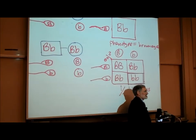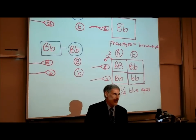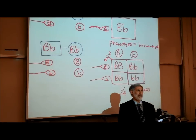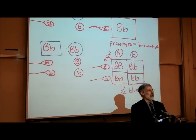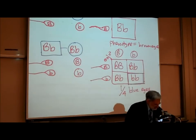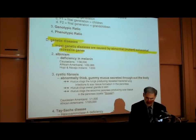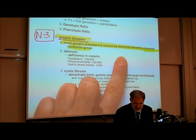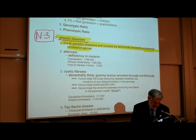When we deal with genetics, we're not really concerned about eye color or height or blood type. What we're really concerned about is genetic diseases — that's what concerns parents. Parents might hope for a son or a daughter with blue eyes, but most importantly they just hope they're healthy. So on page N3, in the middle of the page, we mention that most genetic diseases are caused by an abnormal or mutant autosomal recessive gene.